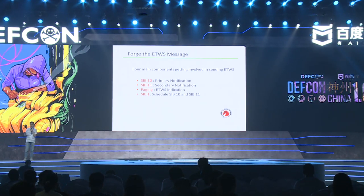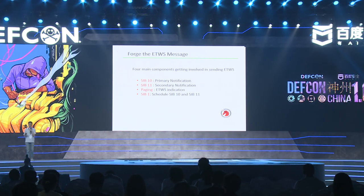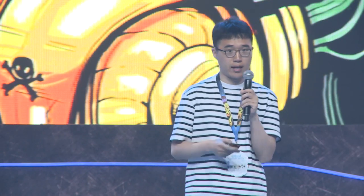Because there are four kinds of warning messages, they share the same architecture. ETWS, which is used for Japan, is the most complicated — it has two levels of alert information. SIB10 transmits the first level, which is the primary notification, and SIB11 transmits the secondary notification. The paging message is used to make mobile phones receive the warning message as soon as possible, and SIB1 schedules SIB10 and SIB11 — it is just a control message that doesn't contain the warning content itself.